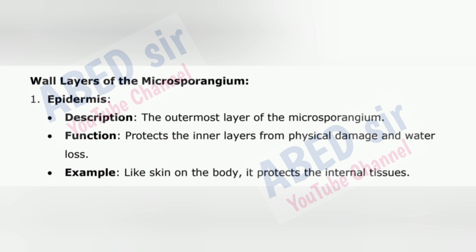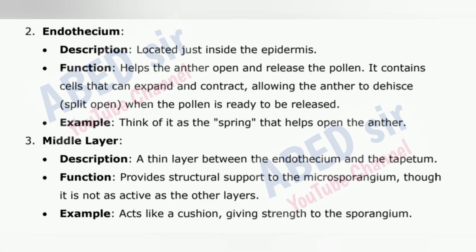Wall layers of the microsporangium: 1. Epidermis — the outermost layer of the microsporangium. Function: protects the inner layers from physical damage and water loss. Example: like skin on the body, it protects the internal tissues. 2. Endothesium — located just inside the epidermis. Function: helps the anther open and release the pollen. It contains cells that can expand and contract, allowing the anther to dehisce, or split open, when the pollen is ready to be released. Think of it as the spring that helps open the anther.